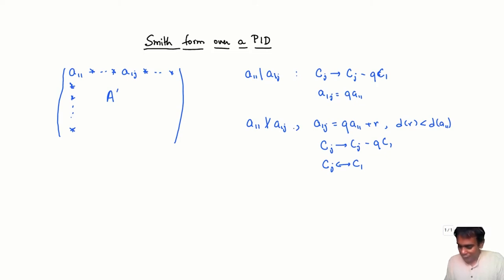But if a_11 does not divide a_1j, so suppose now R is a PID not necessarily a Euclidean domain, then what should I do?